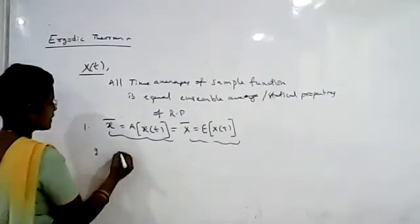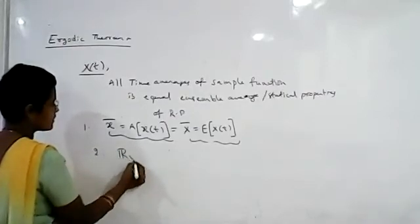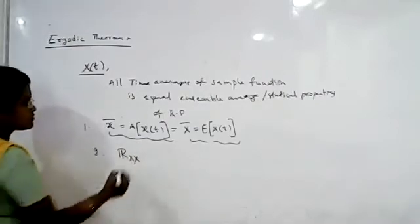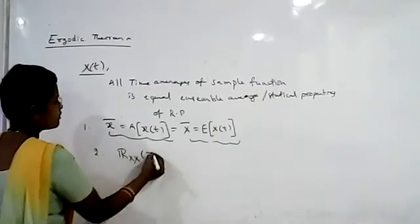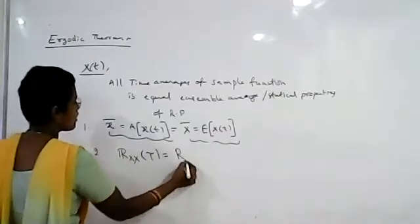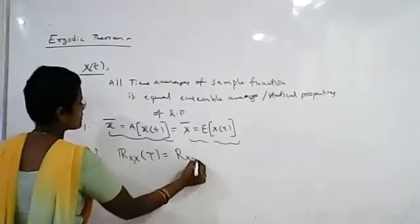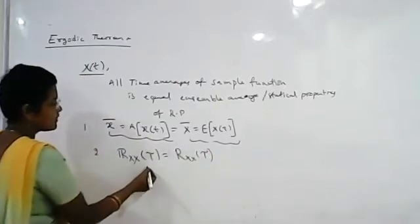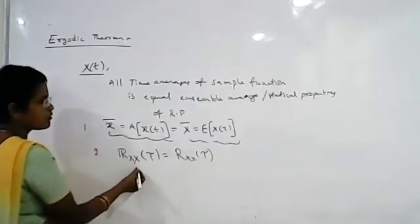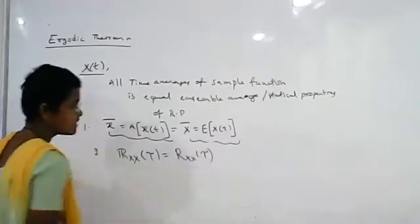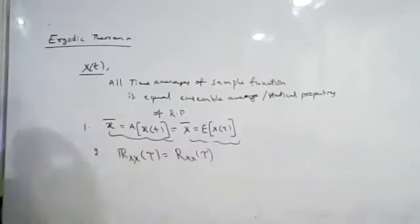The second condition is the time auto-correlation function: R_xx of tau should be equal to R_xx of tau. This is the time auto-correlation function, whereas the right-hand side is the ensemble auto-correlation function.